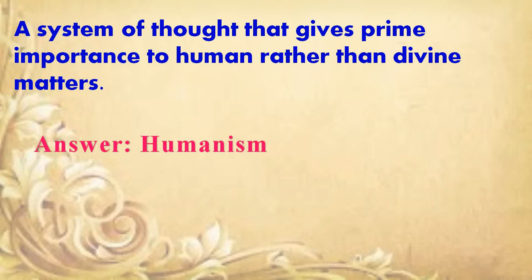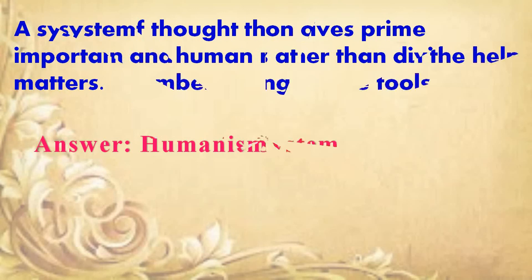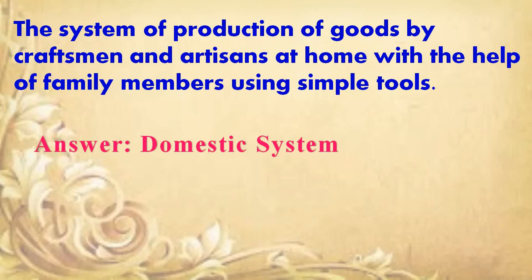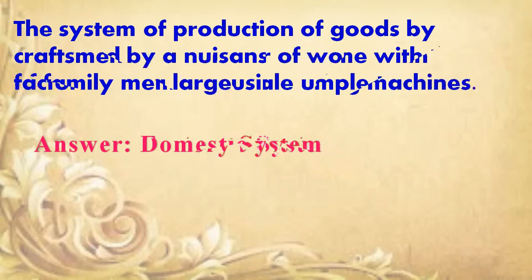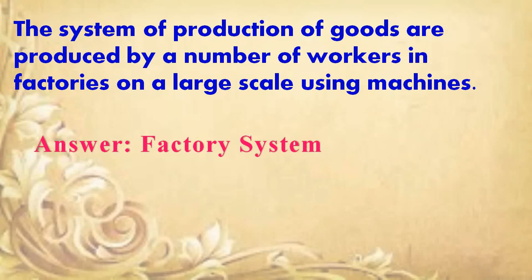A system of thought that gives prime importance to human rather than divine matters. Answer: humanism. The system of production of goods by craftsmen and artisans at home with the help of family members using simple tools. Answer: domestic system. The system in which goods are produced by a number of workers in factories on a large scale using machines. Answer: factory system.